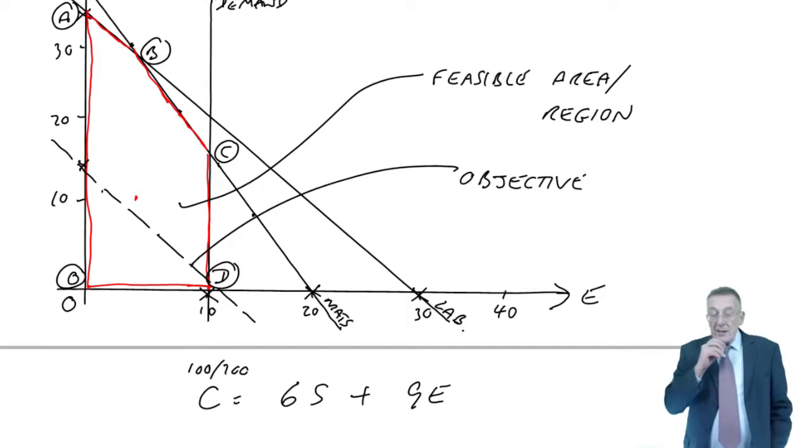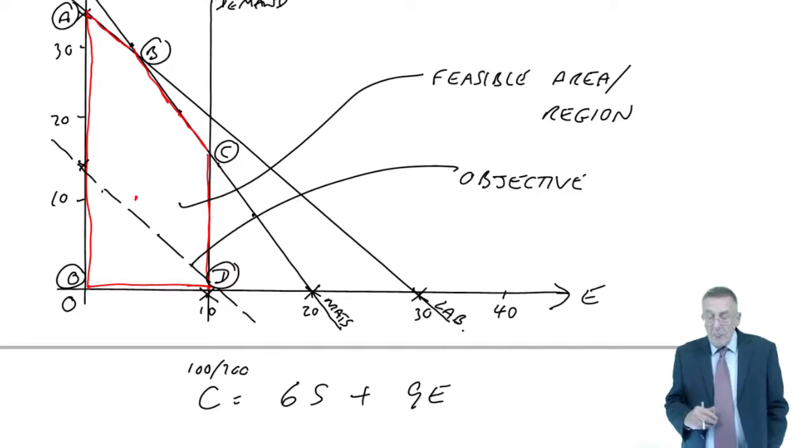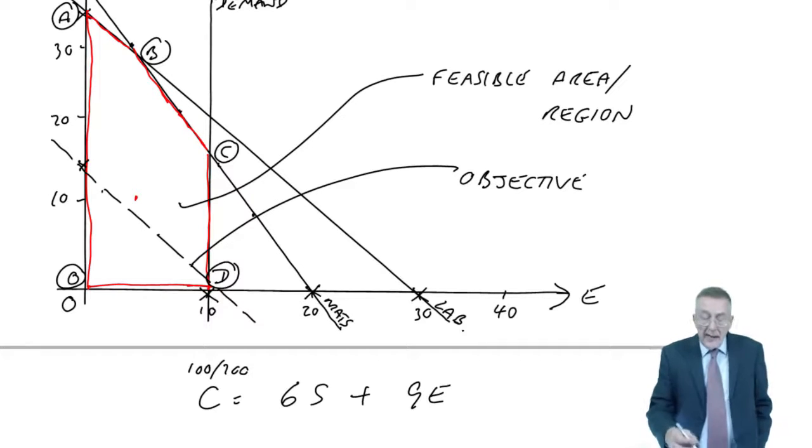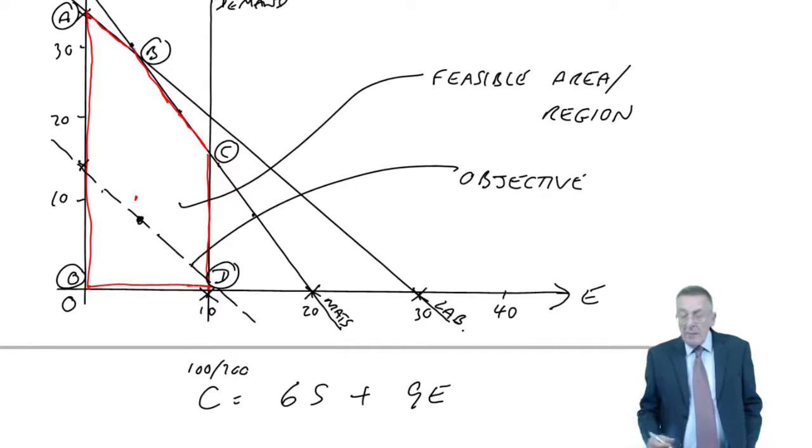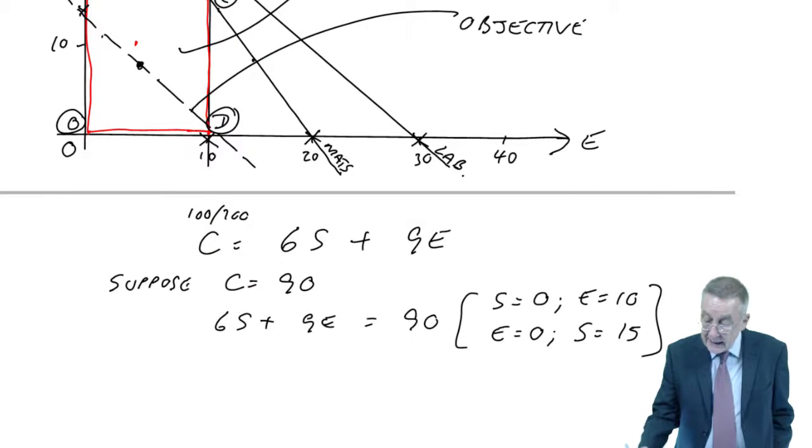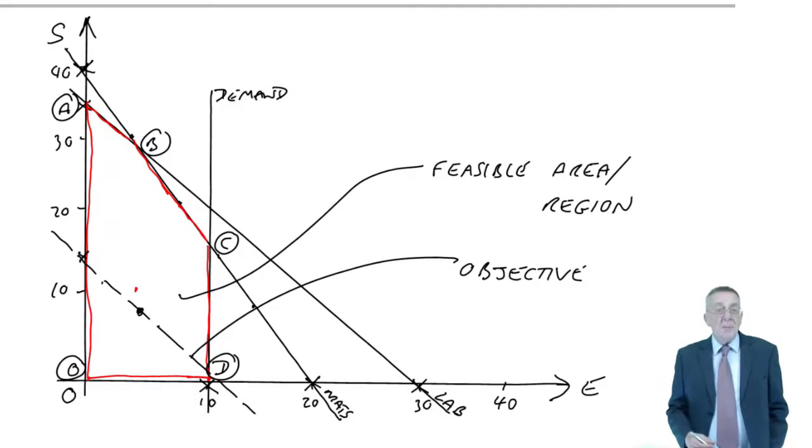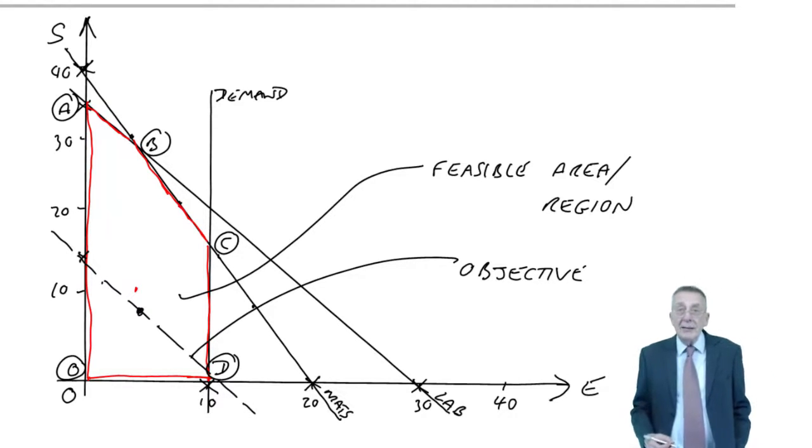Now then, this is the bit to listen to carefully and make sure you've got. Any combination on that dashed line would give me a contribution of 90. But again, I don't know what the contribution is going to be. Maybe the contribution will be 100.